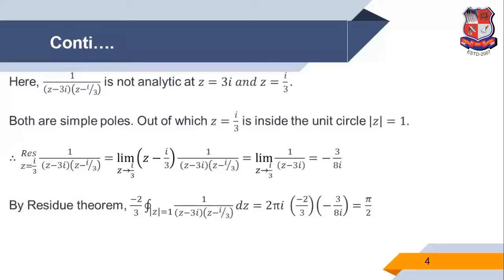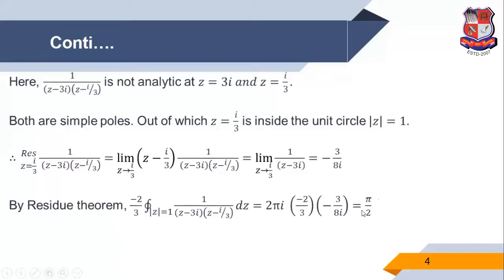Since z = i/3 is the only pole inside |z| = 1, we find the residue there. Using the simple pole formula: Res[z = i/3] = lim_{z→i/3} (z - i/3) · 1/[(z - 3i)(z - i/3)] = 1/(i/3 - 3i) = -3/(8i). By the residue theorem, multiplying by the coefficient (-2/3) and applying 2πi times the residue, the answer is π/2.